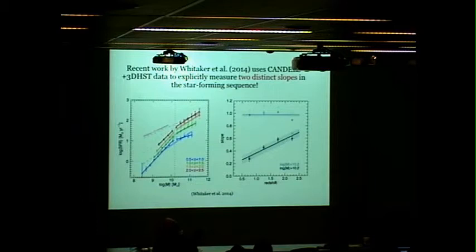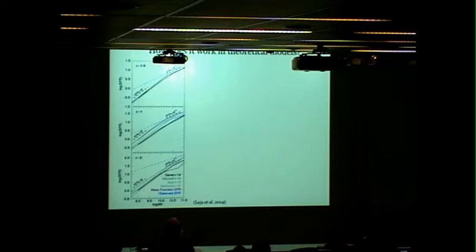There hadn't been any observations until recently, but then in a companion paper Kate Whitaker used the Candles and 3DHST data to explicitly measure this. She split galaxies at a mass of about 10.2 and asked what is the slope and is it different. The slope at low masses appears to be close to unity, and the slope at high masses is flatter. It also evolves with redshift. This has been predicted phenomenologically, and if you look at real galaxies it just might be true.